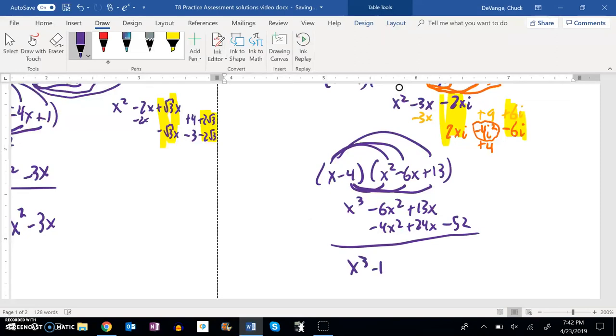Add these together. x cubed minus 10x squared plus 37x minus 52. And there's my polynomial that would have those zeros.